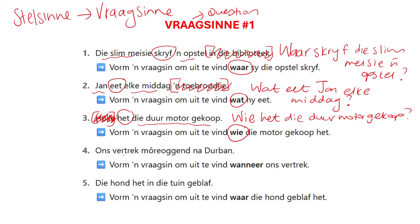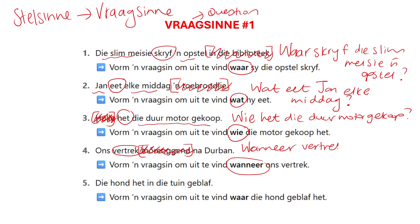Next one. 'Ons vertrek môreoggend na Durban.' We're going to Durban tomorrow morning. We have to form a question to find out wanneer ons vertrek — when we are going to Durban. We know they're going môreoggend, tomorrow morning. So môreoggend should not be in our fragsene. We start with our question word: wanneer. Immediately following the question word will be the verb: vertrek. So wanneer vertrek. The rest of the sentence remains exactly as is in the same order: 'Wanneer vertrek ons na Durban?'